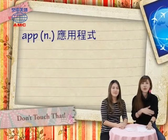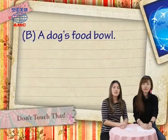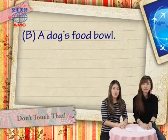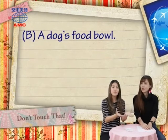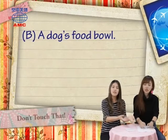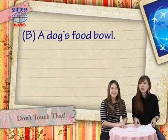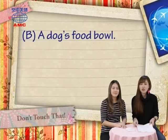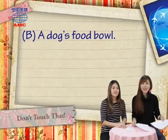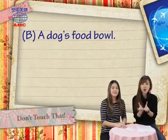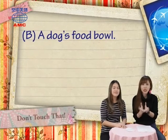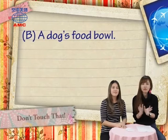Let's take a look at another choice: B. B says: a dog's food bowl. So if you have a dog or a pet, this is the bowl where you put its food in. 有沒有可能是B呢？就是狗狗的 food bowl，就是狗盆，牠吃東西的那個碗。